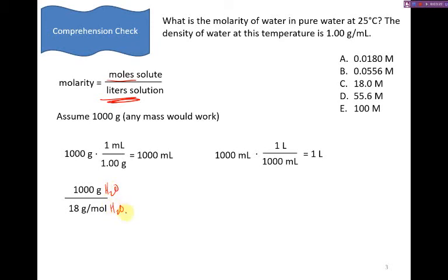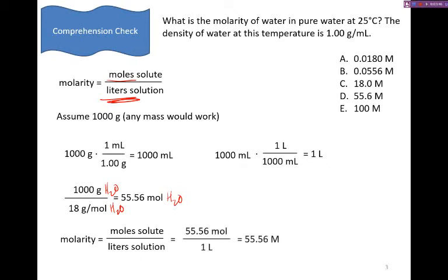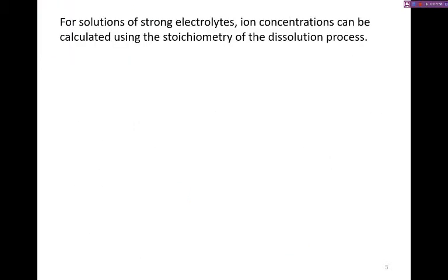To find the moles of water, we're going to take that mass, divide by the molar mass, to get 55.56 moles of water. Then we can combine those, the volume with the moles, to find the molarity. And that gets us 55.56 moles per one liter, or 55.56 molarity water. So that's just a simple demonstration of how to calculate molarity. In the extra practice problems videos, we're going to go through a variety of other scenarios.